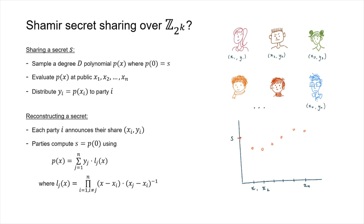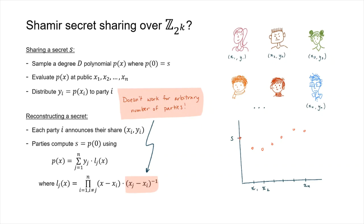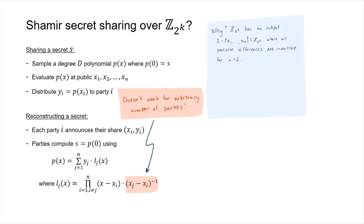That was Shamir for fields, but what if we want to do Shamir over a ring? A ring might be more natural to consider, but the issue arises with the inverse we have to compute. We have to compute the inverse of the difference between every single x_i and x_j, and this doesn't work for an arbitrary number of parties. It turns out that a ring like Z_{2^k} doesn't have any subset {x_1, …, x_n} where all pairwise differences are invertible when n is greater than 2.